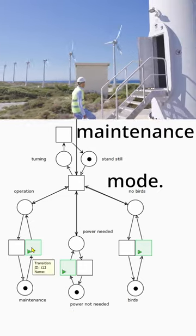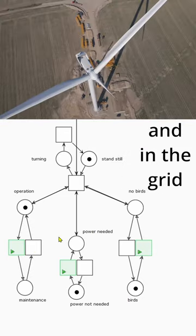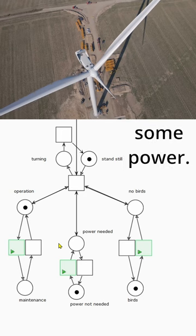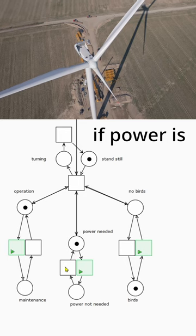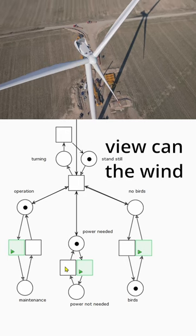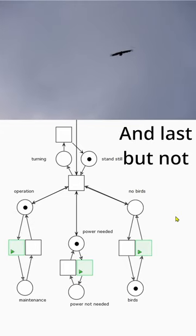So it has to be in operation mode and in the grid we actually need some power. I mean sometimes the grid is saturated. Only if power is needed from the grid point of view can the wind turbine start turning.